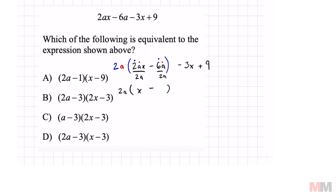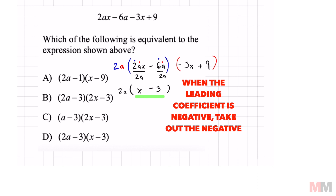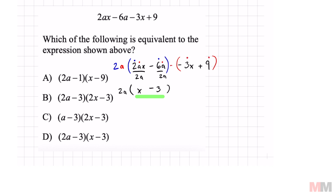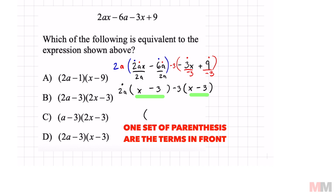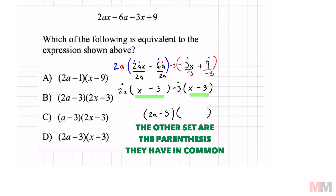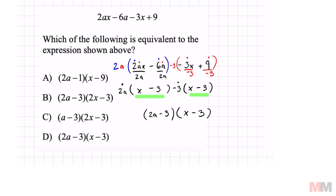That's going to be (x − 3), and my goal for the second two terms is to get the same parentheses on the inside. We put those in parentheses and since the leading coefficient is negative, we take out a negative greatest common factor. I can divide 3 and 9 by negative 3. Negative 3 over negative 3 is x, and 9 divided by negative 3 is negative 3 — they match! The first parentheses gives 2A minus 3 and they have a common factor of (x − 3). Look for that choice — it's letter D.